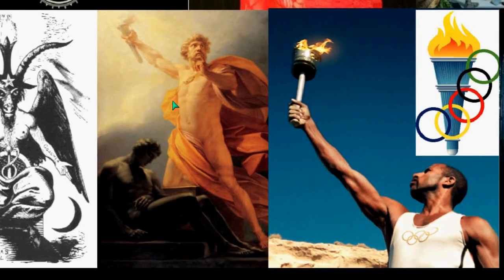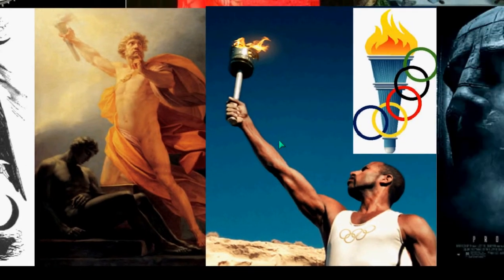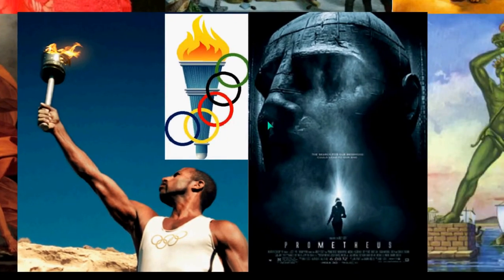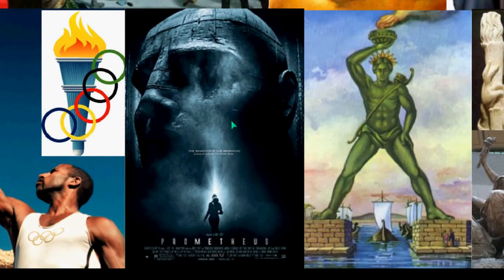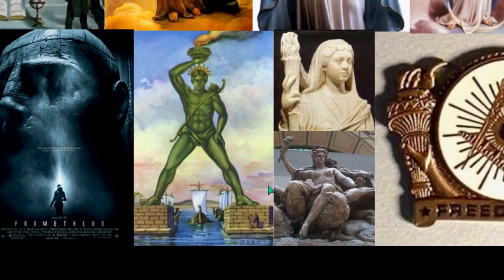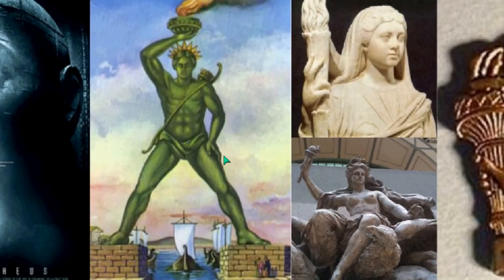We have the goat Baphomet and the Luciferian torch up above. Prometheus — and that whole ritual, which is the Olympic ritual — is Prometheus' ritual of running and stealing fire, wisdom, and enlightenment from the gods. And so that is done every two years, winter and summer Olympic Games. You can understand the movie Prometheus — the ship was named Prometheus, so it went out stealing knowledge from the gods. That was a very strange movie.